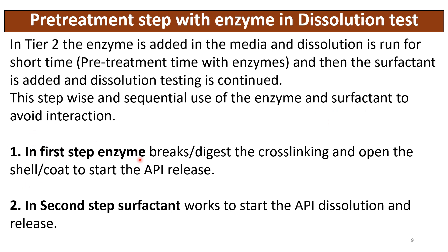In the first step, the enzyme breaks or digests the crosslinking and opens the shell or coating to start the API release. In the second step, the surfactant works to start API dissolution and release — the surfactant provides wetting activity, which is why the dissolution proceeds.